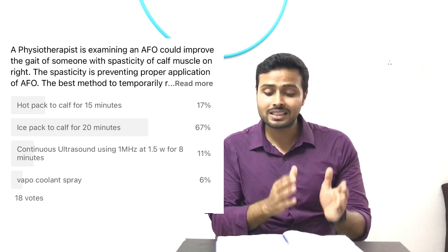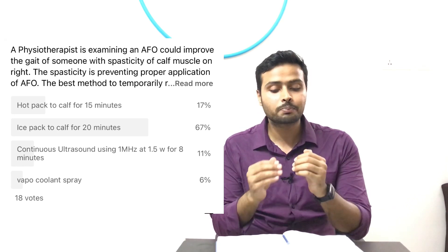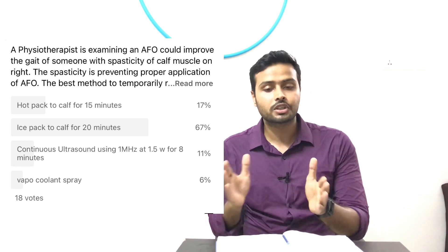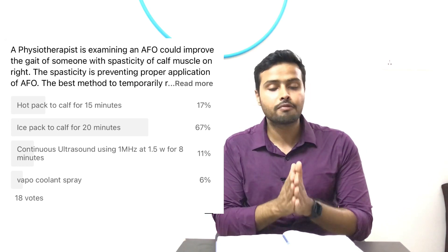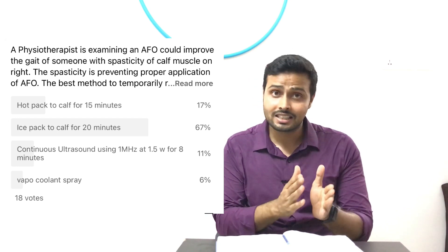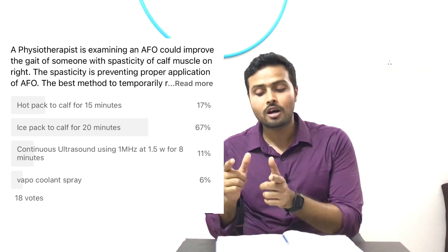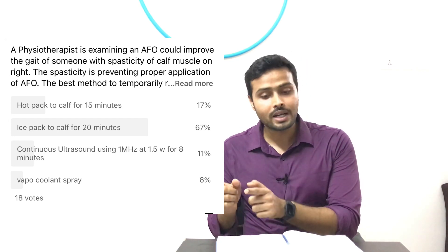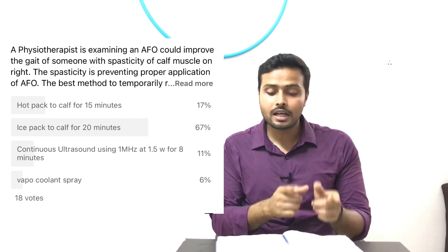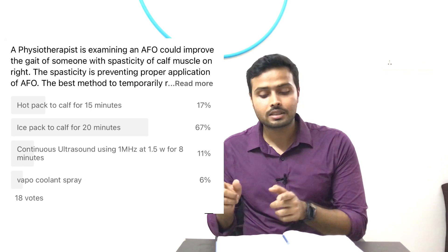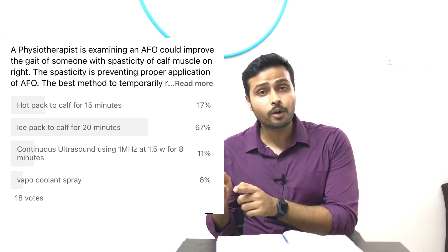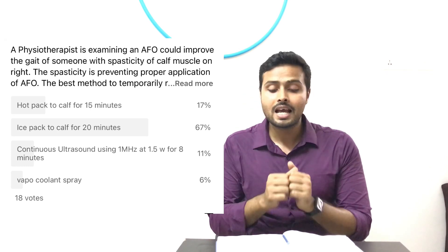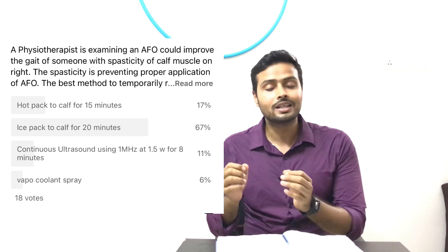The best method to temporarily reduce spasticity allowing proper application of the AFO is: option A, hot pack to calf for 15 minutes; option B, ice pack to calf for 20 minutes; option C, continuous ultrasound using 1 megahertz at 1.5 watts per centimeter square for 8 minutes; and option D, Vapocoolant spray.